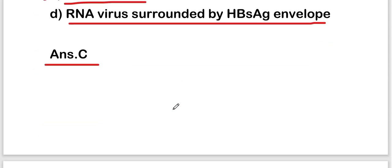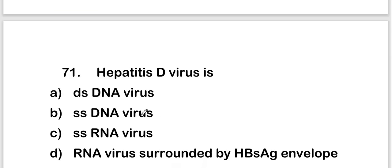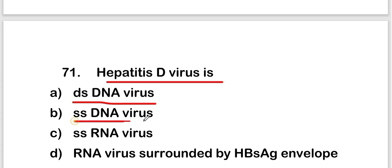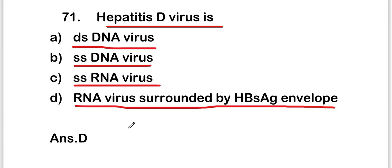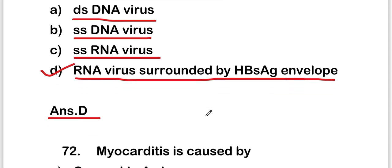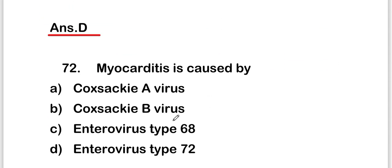The next question is: hepatitis D virus is double-stranded DNA virus, single-stranded DNA virus, single-stranded RNA virus, or RNA virus surrounded by HBsAg envelope. The right answer is option D — hepatitis D virus is an RNA virus surrounded by HBsAg envelope.